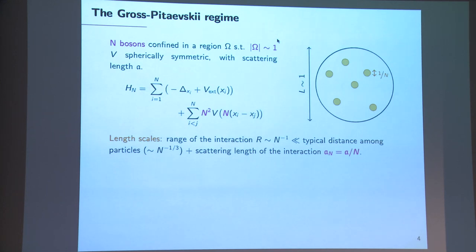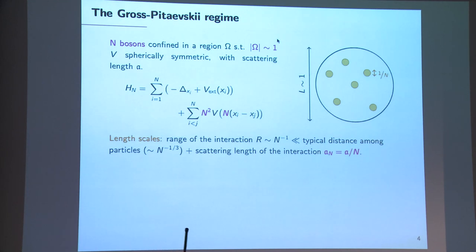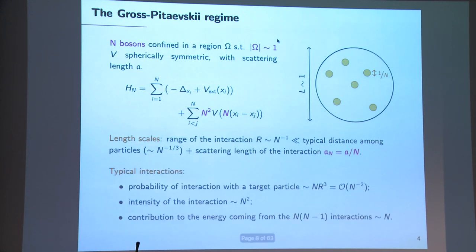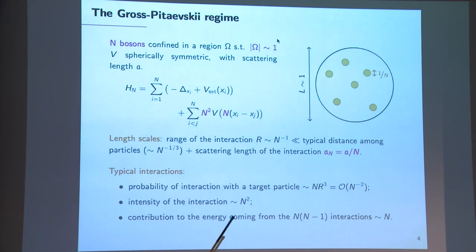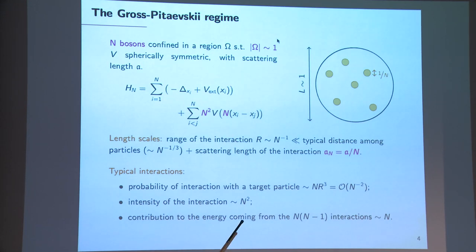The peculiarity of the Gross-Pitaevski regime is that the range of interaction and the scattering length are both of order n to the minus 1, much smaller than the average inter-particle distance, but the intensity of the interaction is very strong. The probability of interaction with a given target particle is n to the minus 2, the intensity is n to the 2, so the force on a single particle from all the others is of order 1. This makes the contribution from the potential energy be of order N rather than N squared.